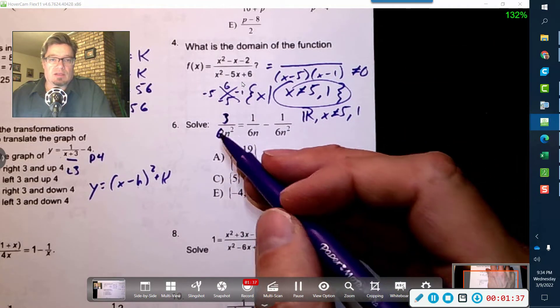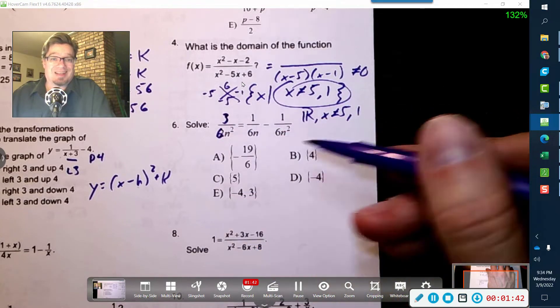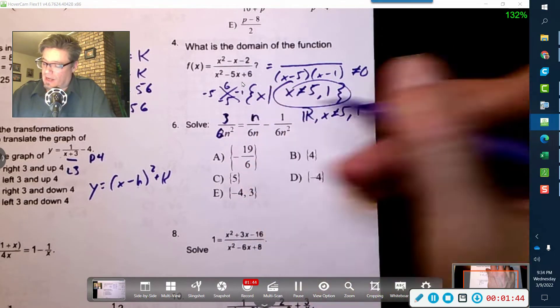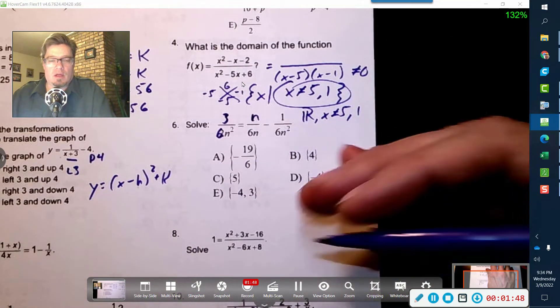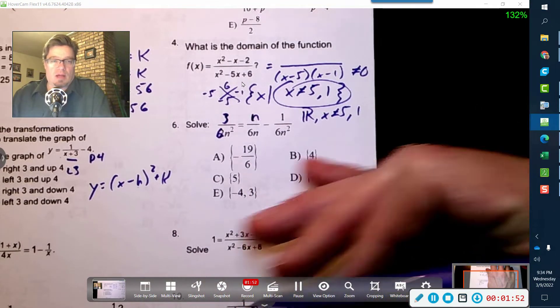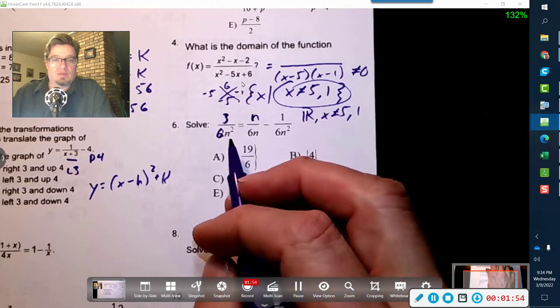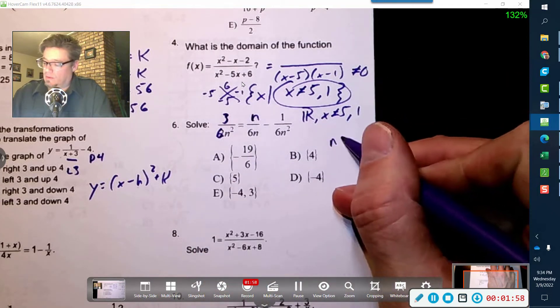Now, he's got 2 n's, he has 1, he has 2, so it looks like the GCF here would be 6 n squared, so I need to give this guy an n. And now that they're all equal, what we can say is, as long as my n doesn't equal 0, I'm going to be okay. 0 would produce 0 in the denominator, so n cannot equal 0.